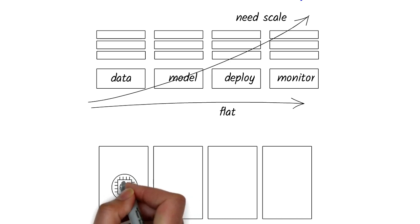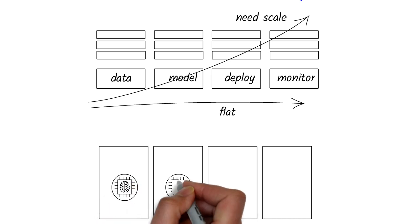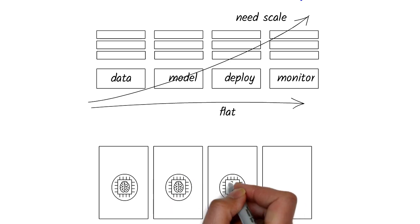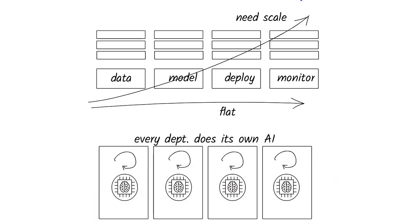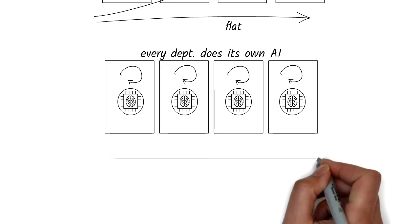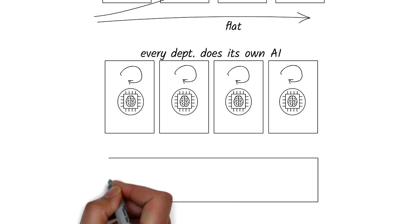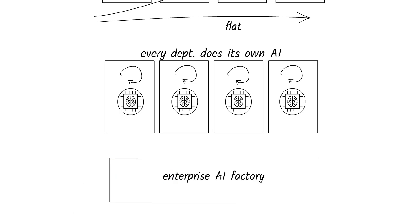This is because since AI came into the scene, every department is experimenting with the technology, trying to be innovative, but in the process kicking off small machine learning projects that often don't see production. For the next project, the cycle begins all over again. The problem is we don't have an enterprise-wide systematic approach to build and deploy AI at scale.